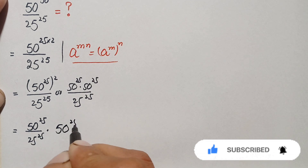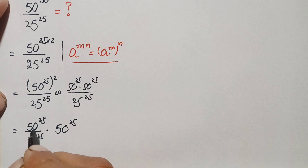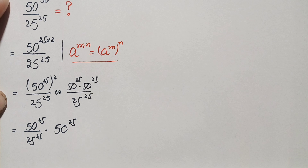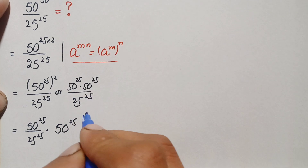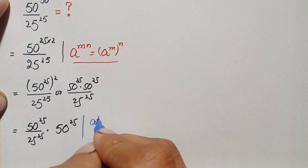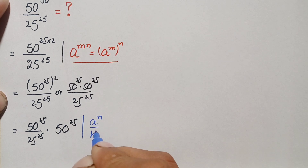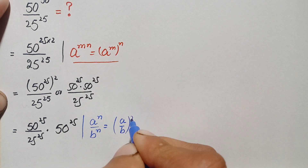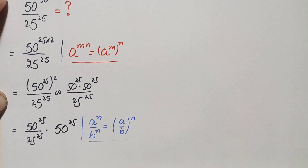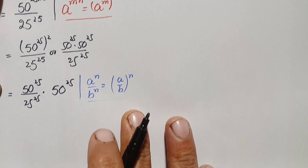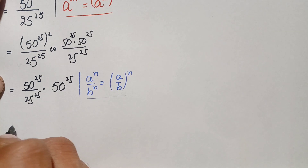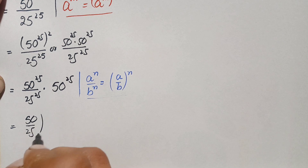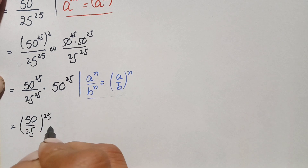Looking at this expression, the numerator and denominator both have the same power. So we will use the same-power division exponential identity: a raised to power n divided by b raised to power n equals a divided by b, whole raised to power n. Using this identity, this becomes 50 divided by 25, whole raised to power 25, times 50 raised to power 25.